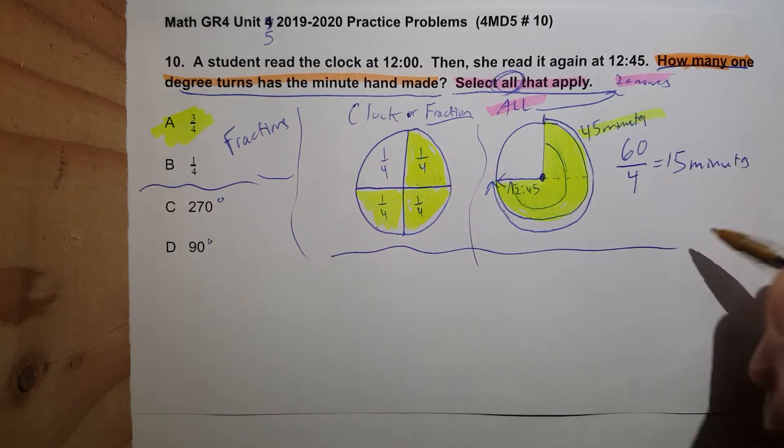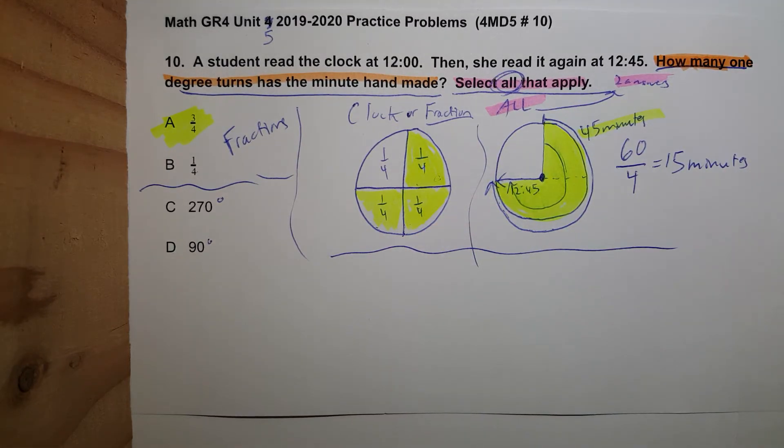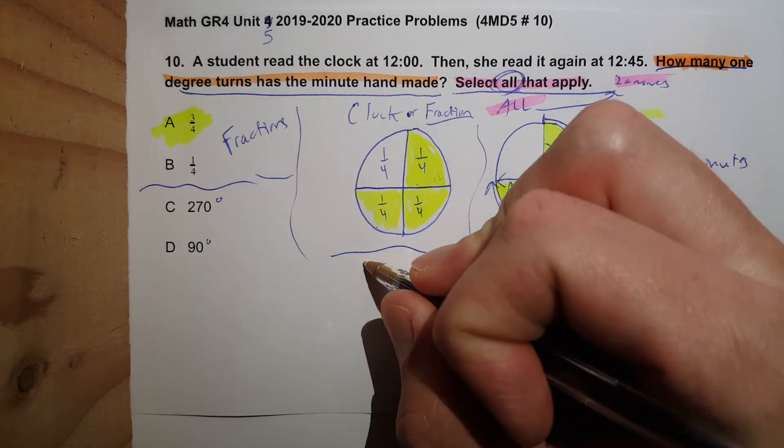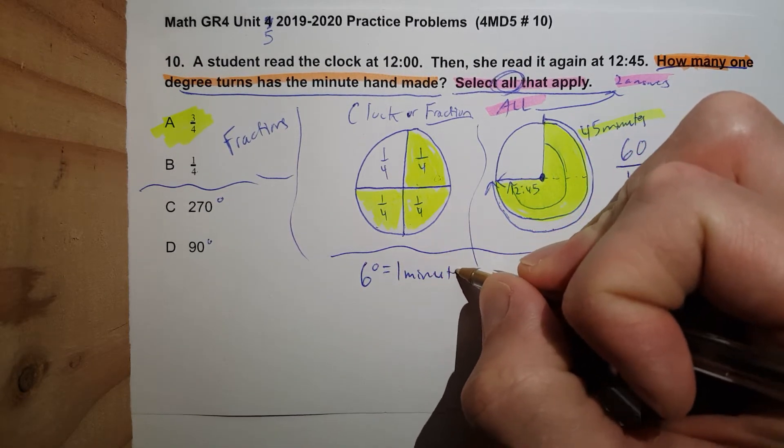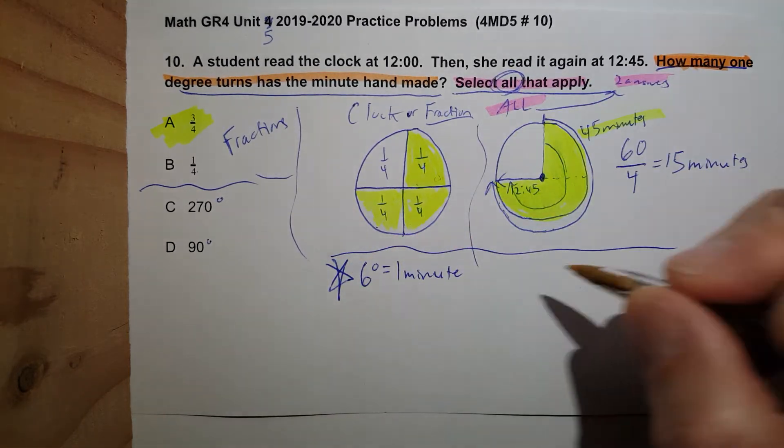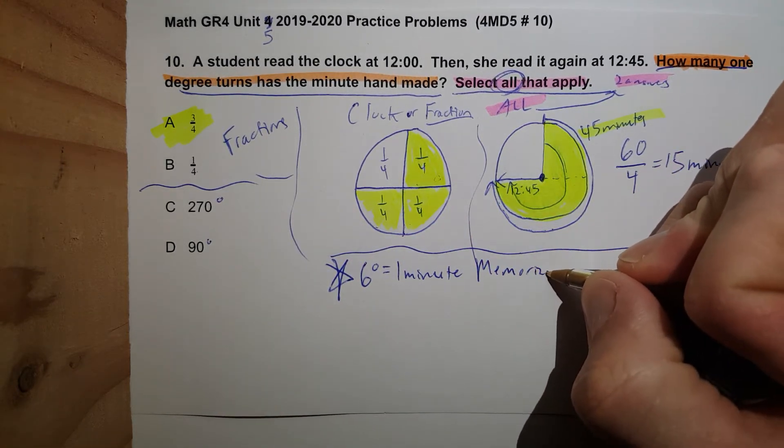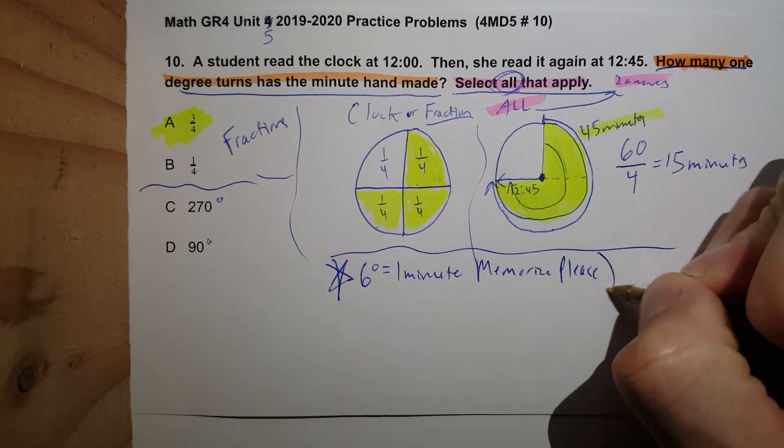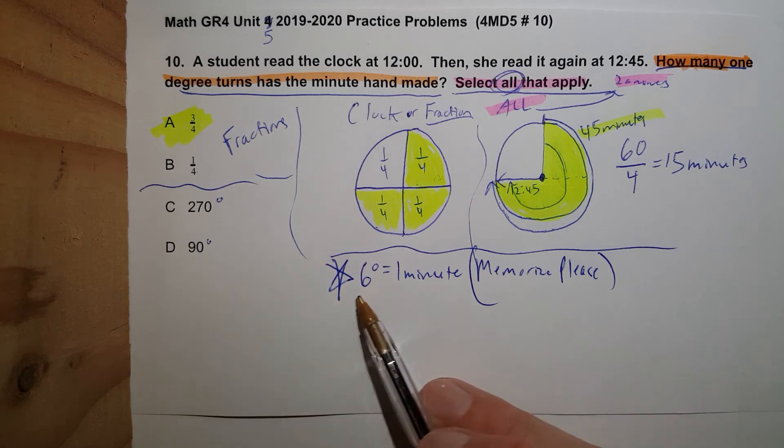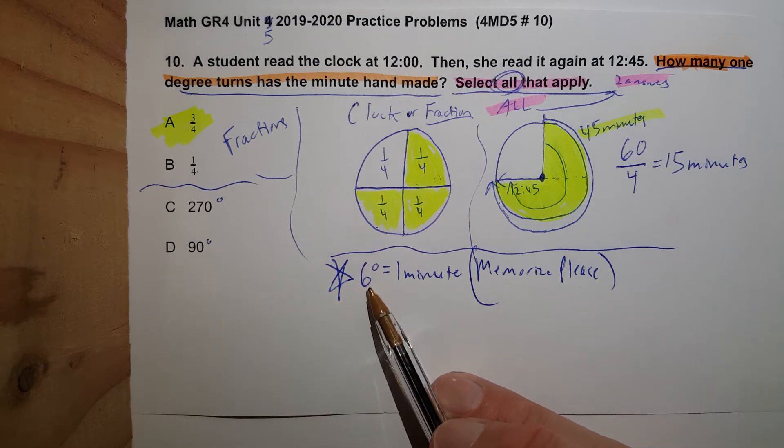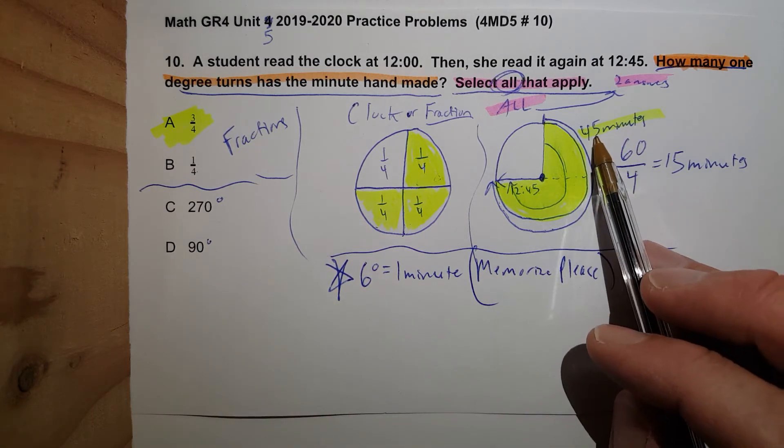Now I remember from a previous lesson, I just memorized this. I know that 6 degrees equals 1 minute. Memorize, memorize please, because anytime you are doing a clock and you are looking at degrees, you will just take it times 6 if you know the number of minutes.